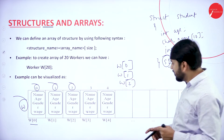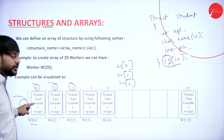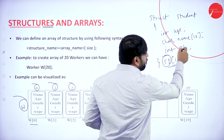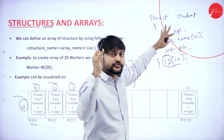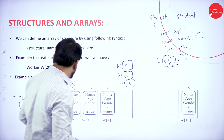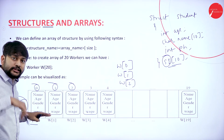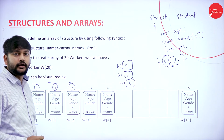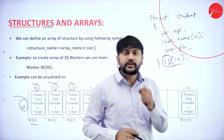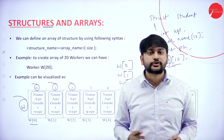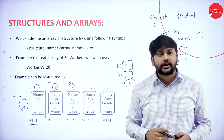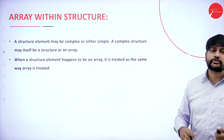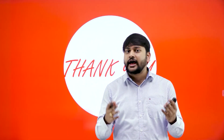How do we store the data? I have four fields: name, age, gender, and wage. All four pieces of information for the first student are stored in W[0], all four for the second student in W[1], all for the third student in W[2], and so on. This is the advantage of implementing a structure array. Array within the structure is one of the important concepts to remember. With that, I've come to the end of this session — thank you everyone.